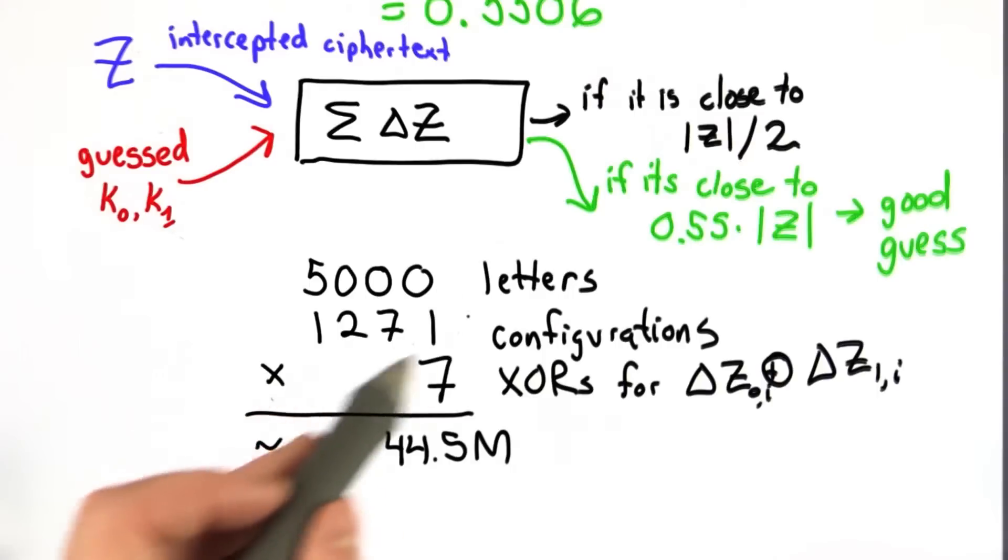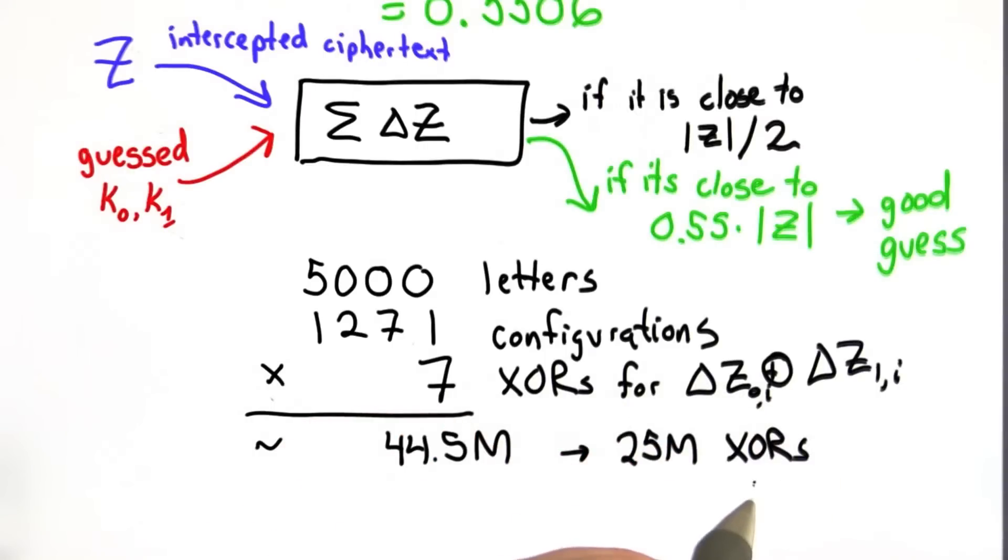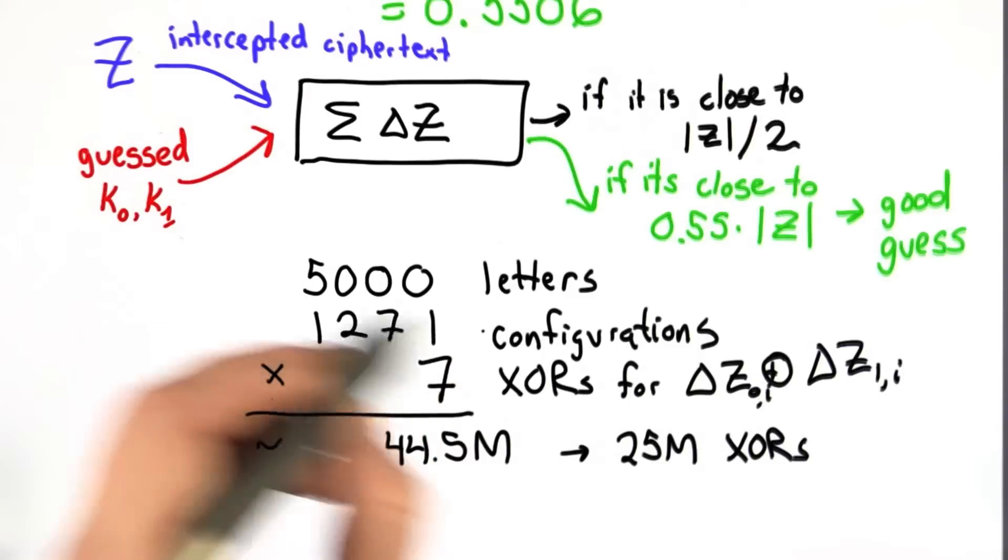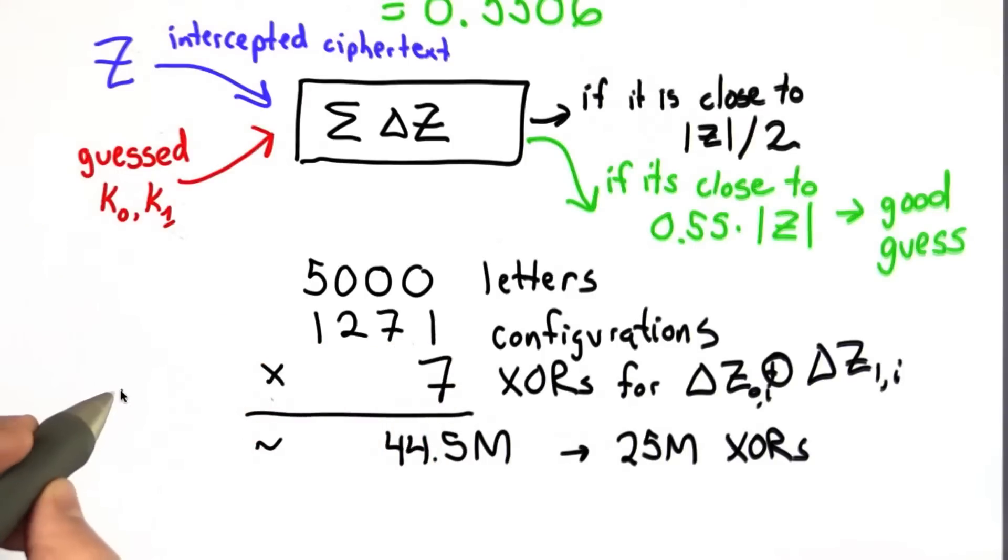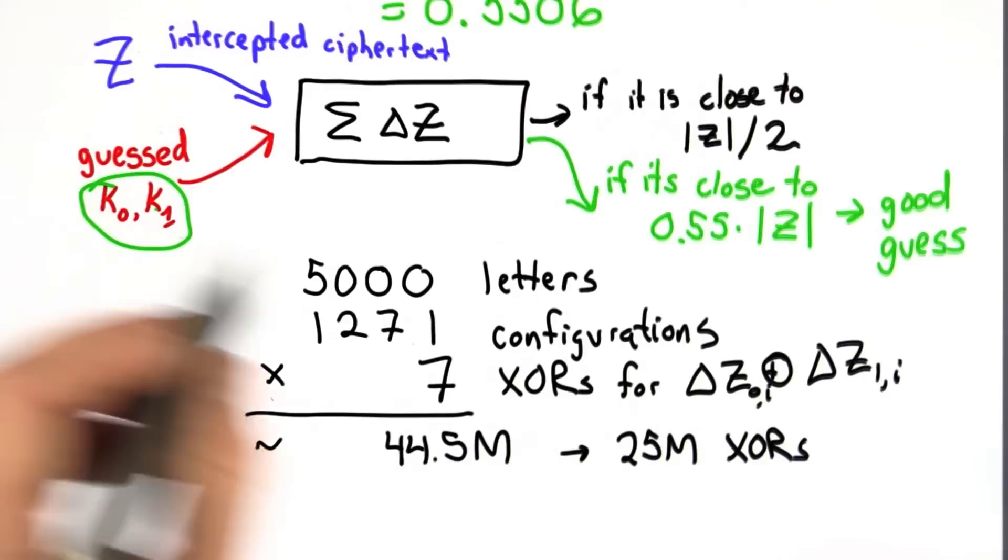If we're unlucky, we might need all 1,271. Normally, we should expect to need about half of that. So maybe, on average, we would need about 25 million XORs to find the configuration, the correct value of X, K1, and K0 for 1 ciphertext.